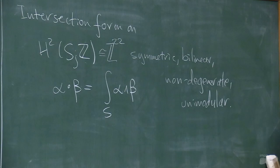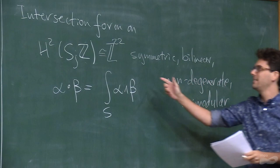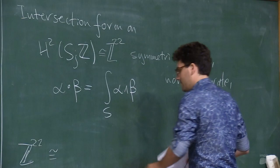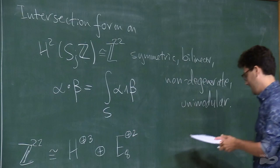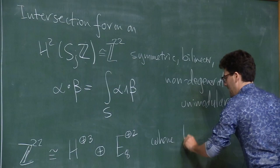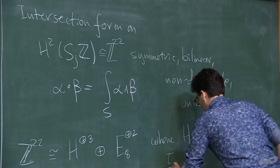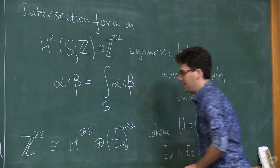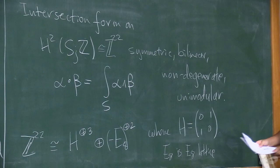A ℤ-module with a symmetric bilinear pairing — I'll call this a lattice. What is this lattice? This ℤ²² is isomorphic to three copies of a certain rank-2 lattice H and two copies of a certain rank-8 lattice, where H is the lattice whose bilinear form is encoded by this matrix, and E₈ is the E₈ lattice — with a negative sign if we think of E₈ as positive definite.